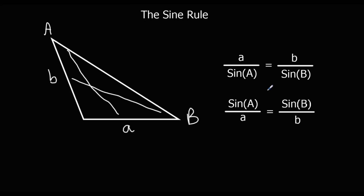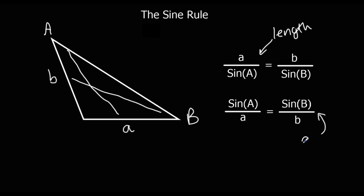We use two different formulas. We've got a over sine A equals b over sine B. We use this one if we're working out a length, because we want the lengths to be on top — it makes it easier to rearrange. If we're working out an angle, we use sine A over a equals sine B over b. Again, it's easier to rearrange if we've got the thing we're working out on top.